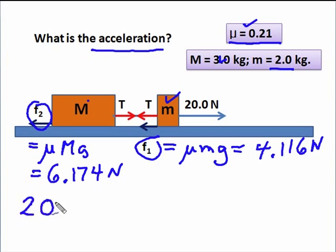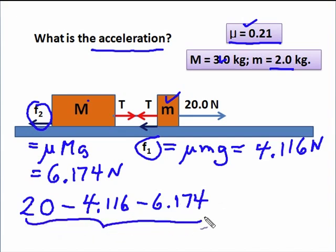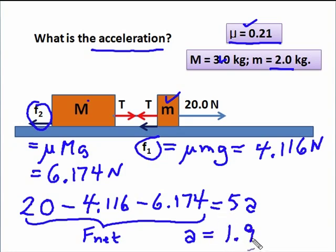Now to find the acceleration, the force that is causing it to move forward is 20. Opposing it, we have the 4.116 (friction 1) minus 6.174 (friction 2). That will tell us the overall force acting on the masses. Remember, the tensions cancel each other out. They don't affect the whole system and they're just acting as connectors there. The total mass is 5. And when I work that out, I will find that this new acceleration now is 1.942 meters per second squared.